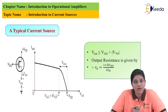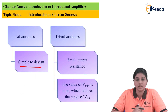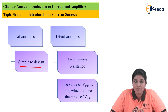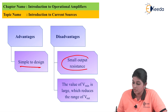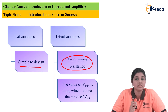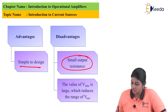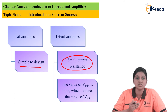The circuit has advantages as well as disadvantages. One advantage of the circuit is that it is simple to design and therefore very easy to fabricate on the chip as it requires less area. From the disadvantage point of view, the circuit provides small output resistance, because of which it is not possible to obtain constant current at the output. The second disadvantage is that the value of V minimum is large, because of which the range of output voltage is reduced.